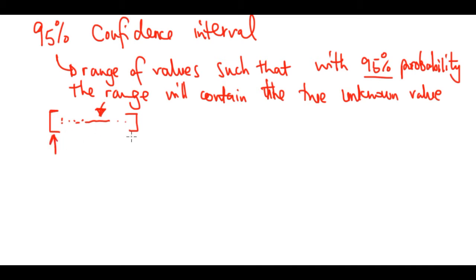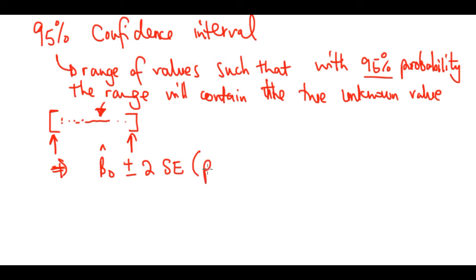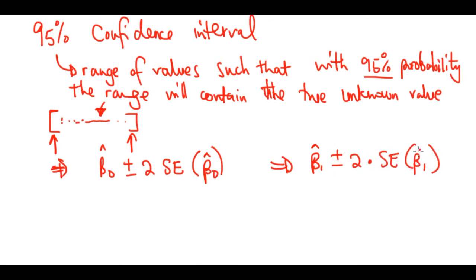The range is defined in terms of a lower and upper limit from the sample data. For linear regression, the 95% confidence intervals are given by: for beta_0, it's the estimate beta_0 plus or minus two standard errors of beta_0; and for beta_1, it's the estimate beta_1 plus or minus two times the standard error of beta_1.